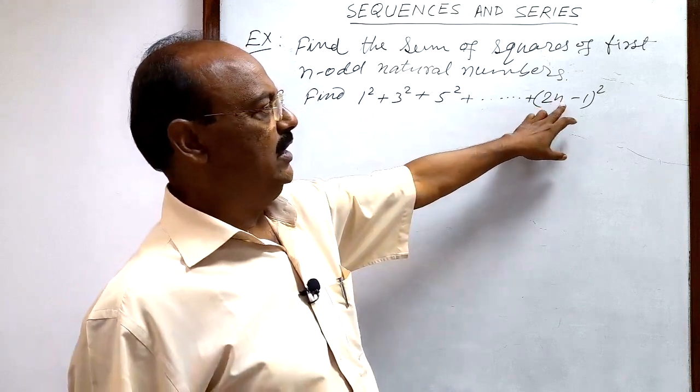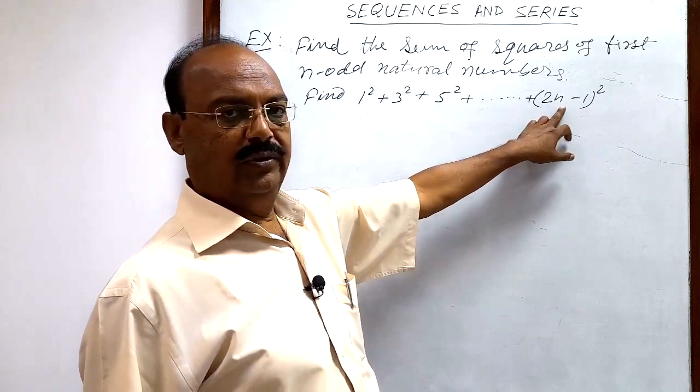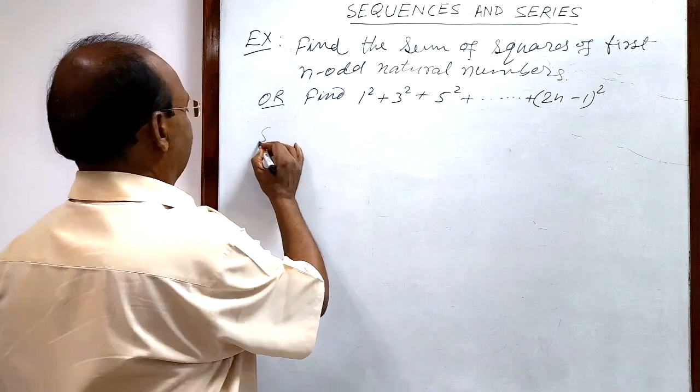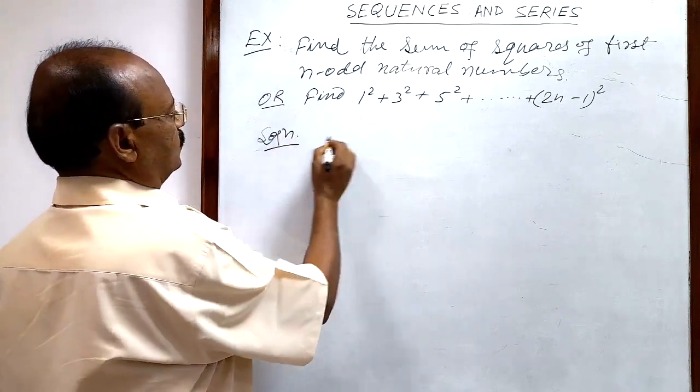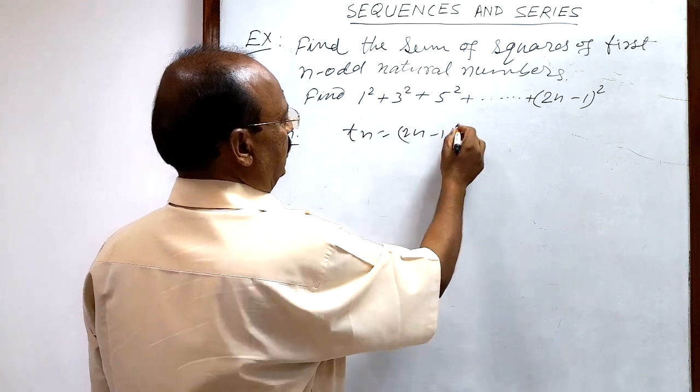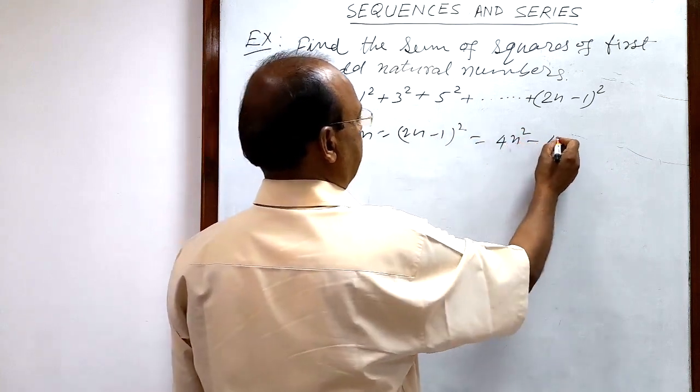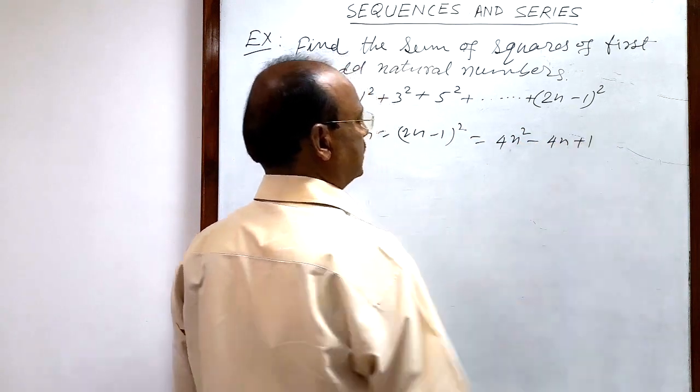This is the nth term here. In this series, this term is nth term. So nth term is given here. The nth term is (2n-1)² and this is 4n² - 4n + 1.